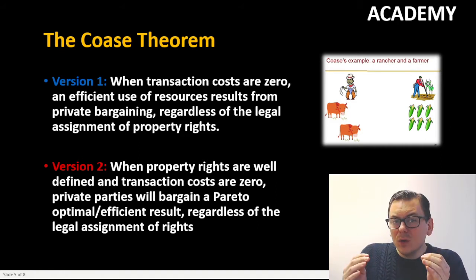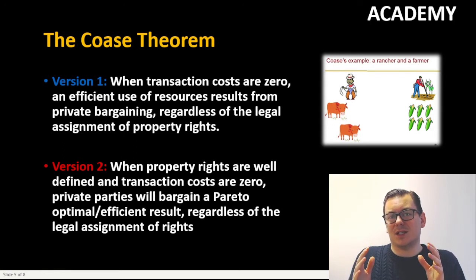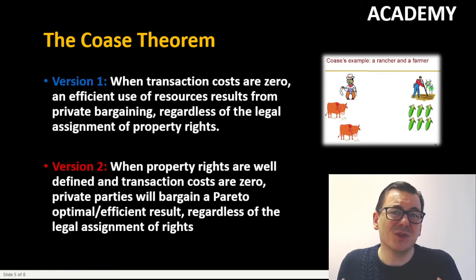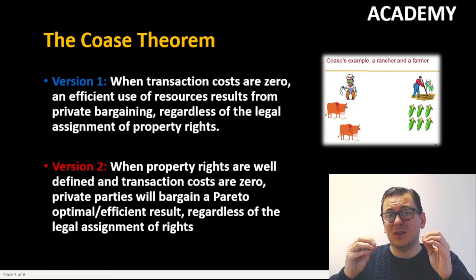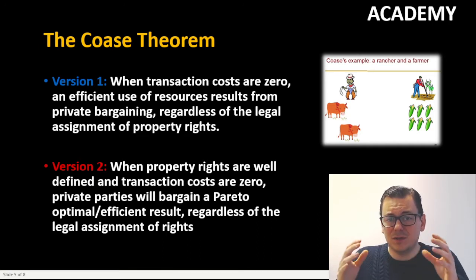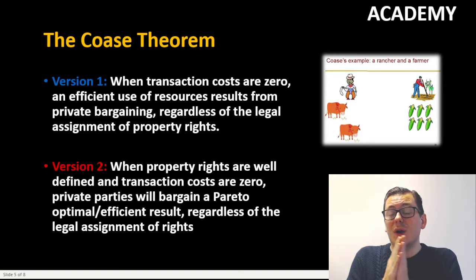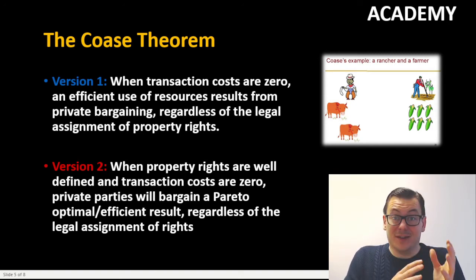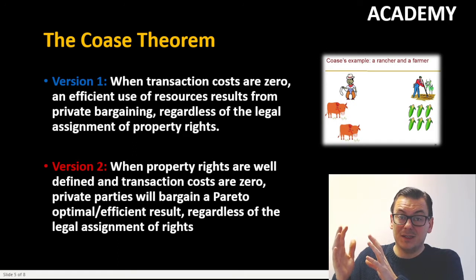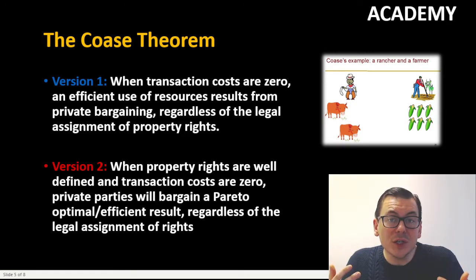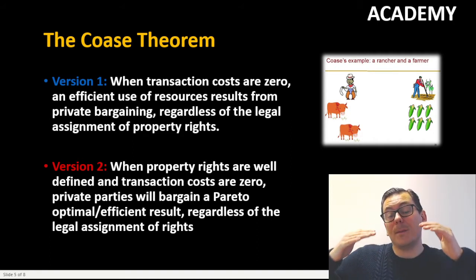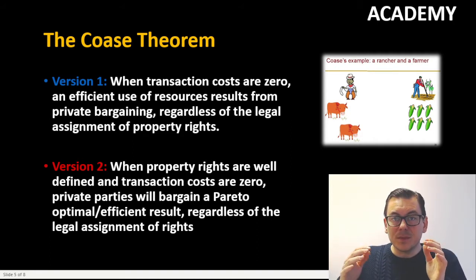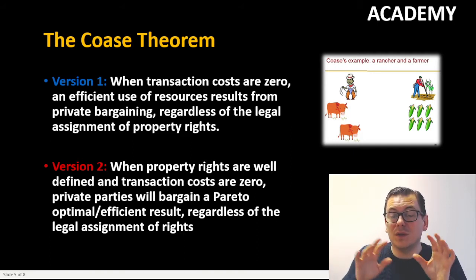What Coase says is that when there are no transaction costs — when the parties can actually talk together and both might benefit from finding a good solution — and they know who has the right to either have the cattle or have the farmland, they can negotiate. They will negotiate toward the Pareto optimal result, meaning they will try to find a solution where both parties wealth-maximize without the result being hurtful to either party.